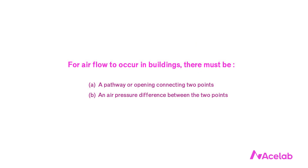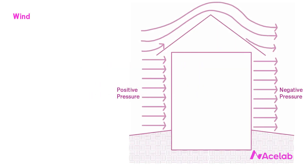For airflow to occur between two points — say the outside and the inside — there must be a pathway or an opening connecting those two points and an air pressure difference. Both of these conditions must exist. If we have a pathway but no pressure difference, we won't have airflow. If we have a pressure difference but no pathway, we won't have airflow either. In practice, it's very difficult in building design to eliminate or perfectly seal all of the pathways. Pressure differences are generated by wind, temperature, and mechanical equipment.